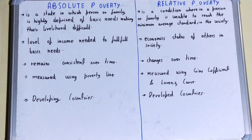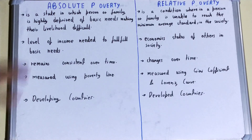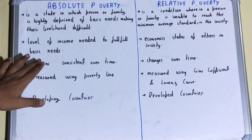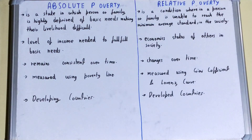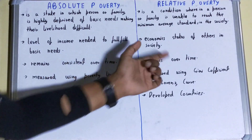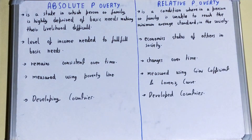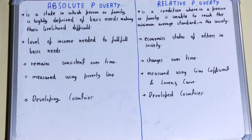If we talk about the standard, absolute poverty remains consistent over time — it stays constant. But relative poverty changes over time, because a person moves from one society to another society, so it keeps changing.